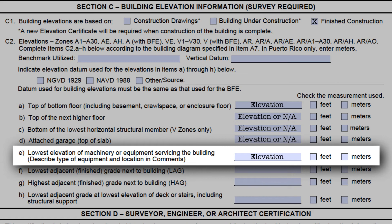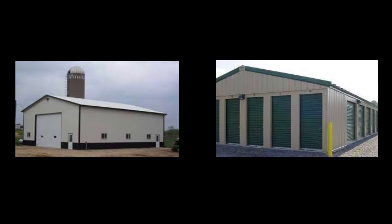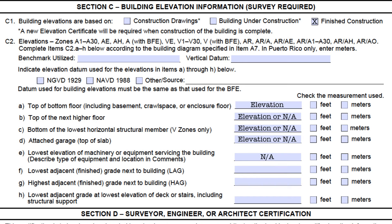It must be shown on the form. You may have cases where there is no machinery or equipment servicing the building — situations like ag buildings or storage units where no heating, cooling, or hot water is required. In these cases, NA is the proper entry for this field. Also, pictures are not an adequate method of showing the elevation. The actual elevation of the lowest piece of machinery or equipment must be on the EC. Then, please work with your surveyors to have them describe the type and location of the equipment in the comments box in section D.